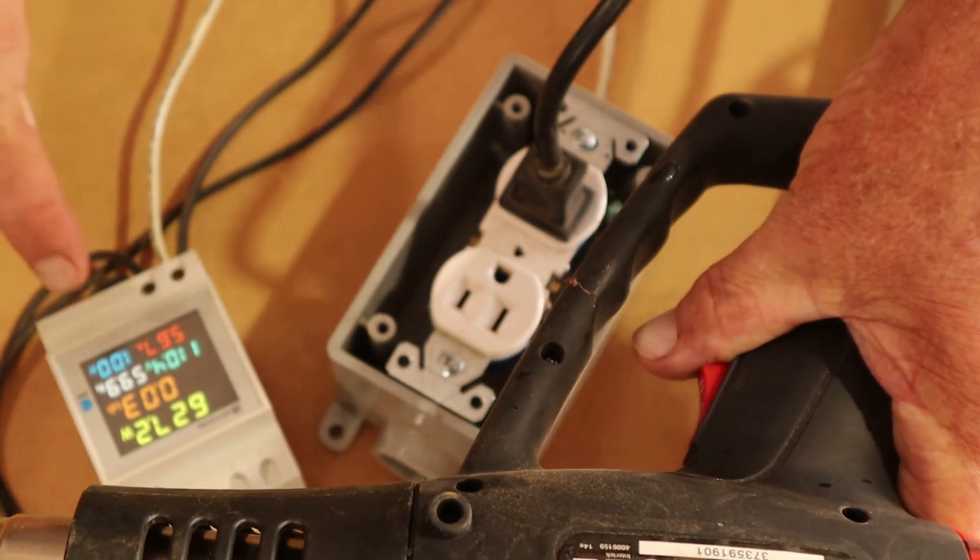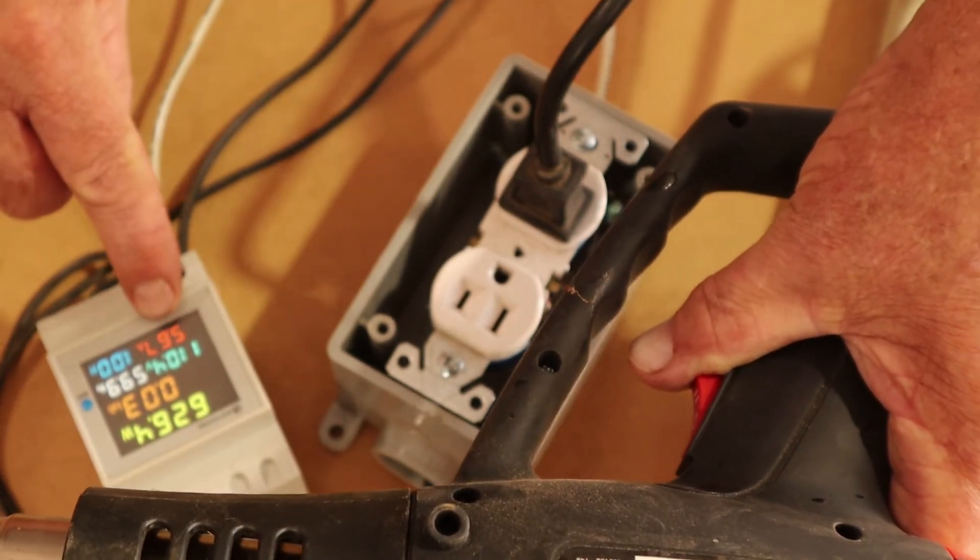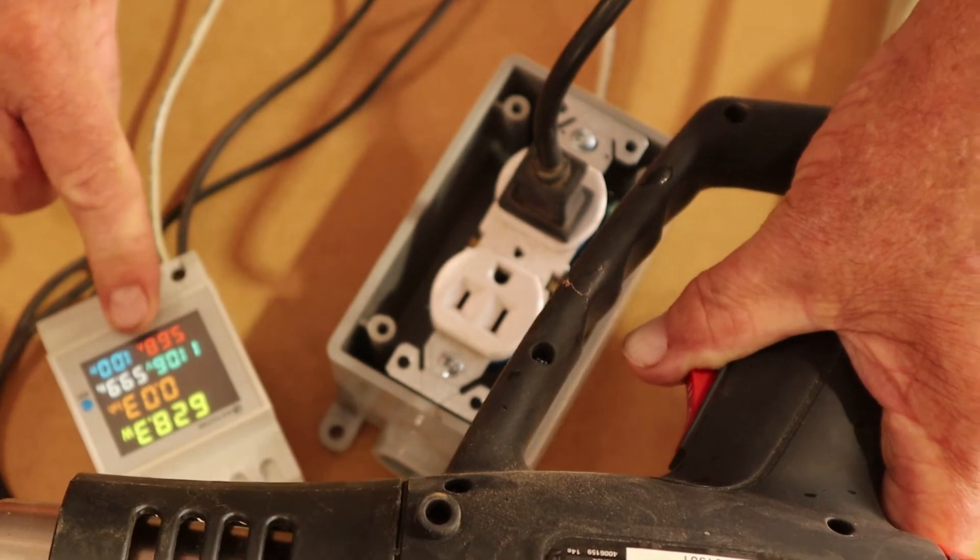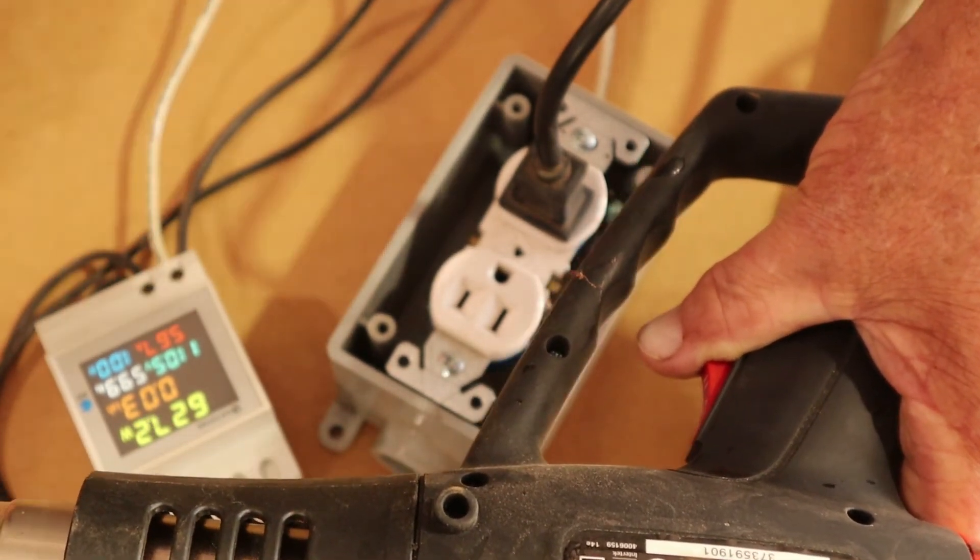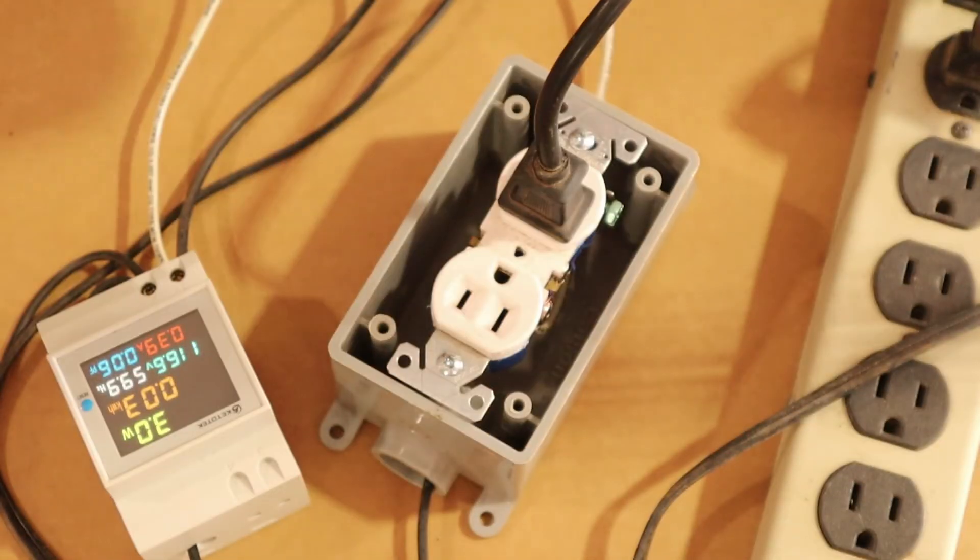Now we're at low, 627.9, 110.5 volts, 59.9, 5.68 amps. 1.00 in the power factory. Now we're going to shut it back off.